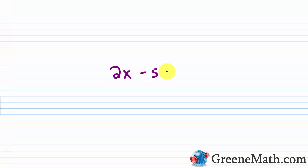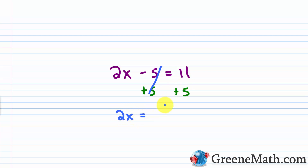Something like 2x minus 5 is equal to 11. We know if we solve this, we get x equals some number. If I quickly solve this, I could add 5 to each side of the equation. This is going to cancel, giving us 2x is equal to 16. To isolate x, we just divide both sides by 2, and we find that x is equal to 8.